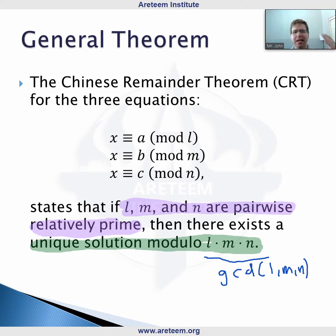Then there exists a unique solution modulo l times m times n. If you have a number with remainder one when you divide by two and remainder two when you divide by three, adding six to it, which is divisible by two and three, is not going to change things. We don't have total uniqueness, but we have uniqueness in the mod sense.